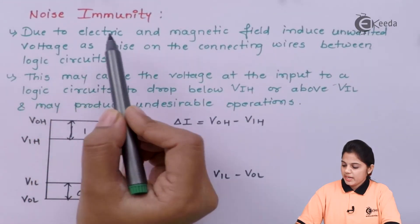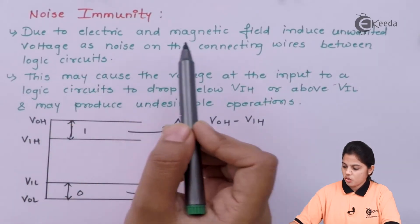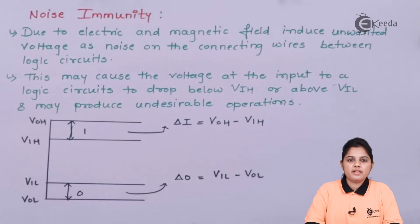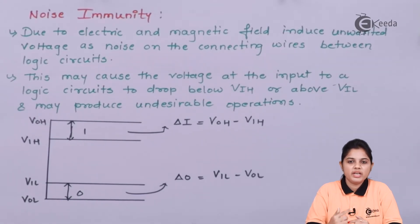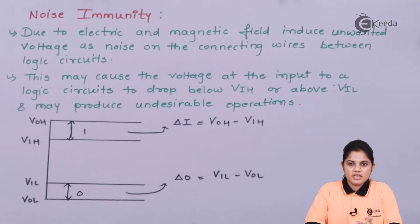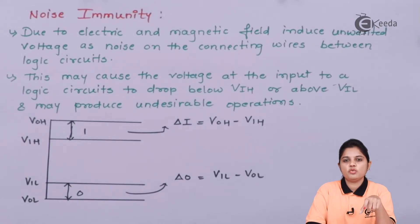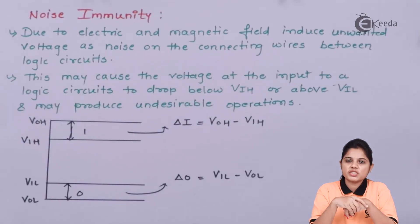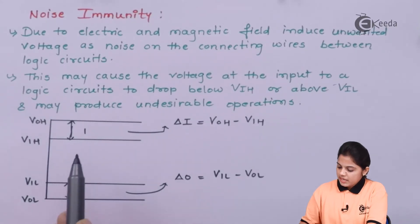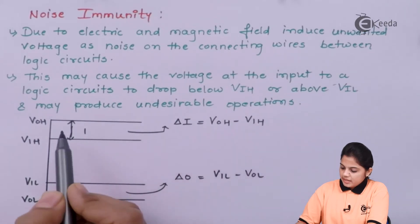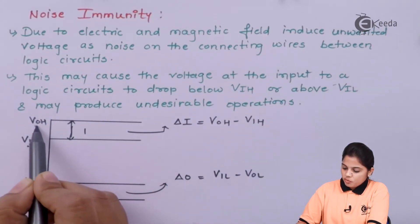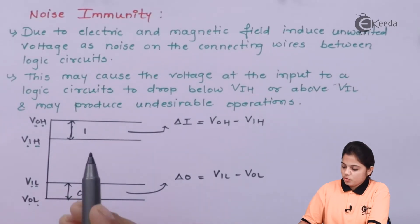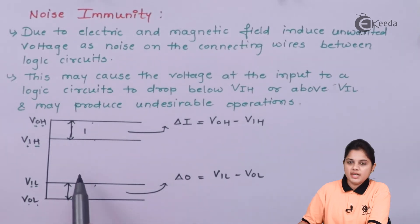Next is noise immunity. Due to electric and magnetic fields, unwanted voltages are induced as noise on the connecting wires between logic circuits. When you interconnect different pins of an IC — for example a NAND gate IC — electric or magnetic fields can induce voltage over those pins, and that voltage can be considered noise if it is not within a predefined level of high or low. This is shown in the diagram where VIH represents input high, VOH output high, VIL input low, and VOL output low.